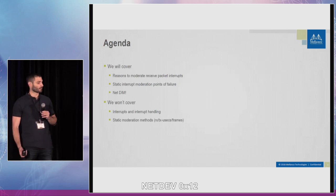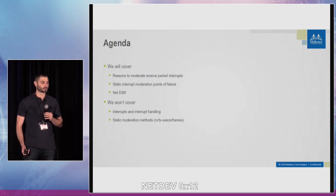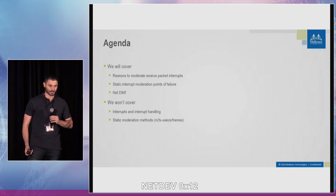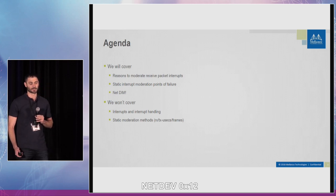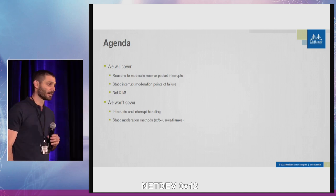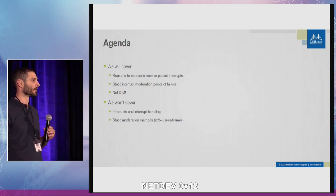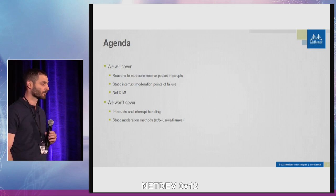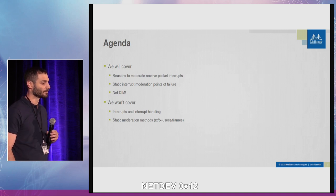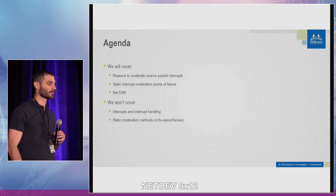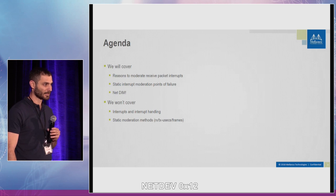What we are going to cover: the reasons for packet interrupt moderation on the receive side — it's not the only part that matters, but we'll focus on that. Static interrupt moderation points of failure, where it stops working very well. And of course, NetDIM — what's good about it, how it's implemented, what's the algorithm, and the performance benefits. We're not going to cover interrupt handling in general, or what the exact static moderation methods are and how they are implemented. I assume this is common knowledge, but if not, I'll try to explain it a little bit.